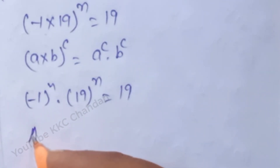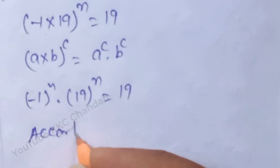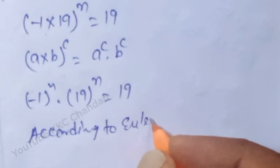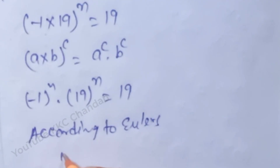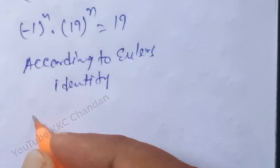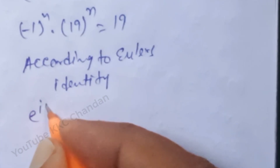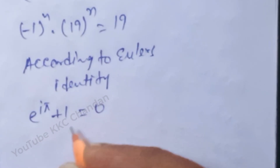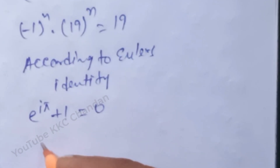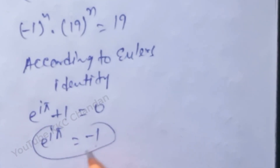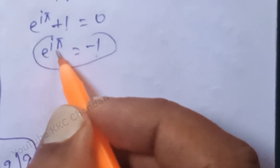After that, according to Euler's identity, e^(iπ) + 1 = 0, which means e^(iπ) = -1. So in place of -1, we substitute e^(iπ).